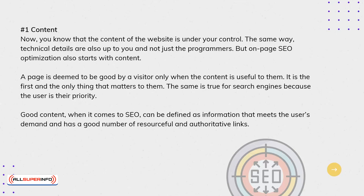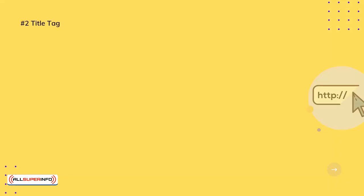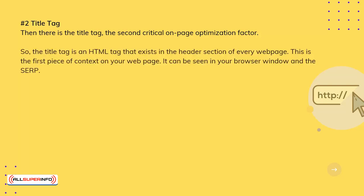Number 2: Title Tag. Then there is the title tag, the second critical on-page optimization factor. The title tag is an HTML tag that exists in the header section of every webpage. This is the first piece of context on your webpage. It can be seen in your browser window and in the search engine.